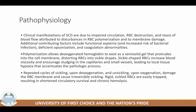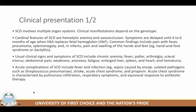Polymerization allows deoxygenated hemoglobin to exist as a semi-solid gel that protrudes into the cell membrane, disrupting the red blood cells into sickle shapes. Those sickle-shaped cells increase blood viscosity and encourage sludging in the capillaries, leading to local tissue hypoxia. Repeated cycles of sickling upon deoxygenation and un-sickling upon oxygenation damage the red blood cell membrane and cause irreversible sickling. Those irreversibly sickled red blood cells are easily trapped, resulting in short-term circulatory survival, chronic hemolysis, and chronic anemia.